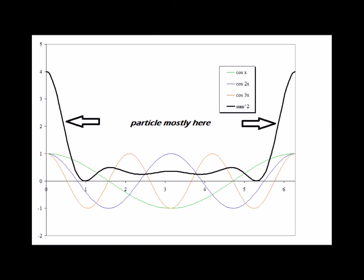Here we show the probability density function for the linear combination of three eigenfunctions: e to the i kx, e to the 2ix, and e to the 3ix. Note that by adjusting the coefficients, we can begin to localize the particle. As the momentum, which depends upon k, becomes more indeterminate, the position, the x-coordinate, becomes more definitive.